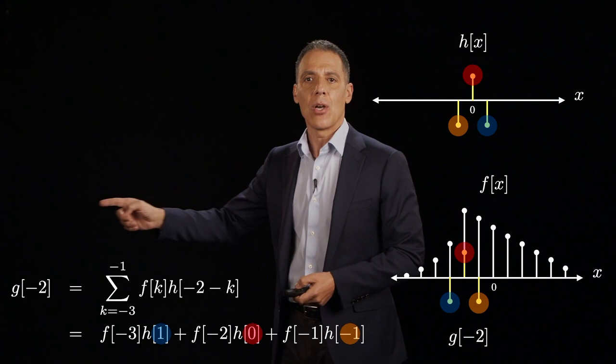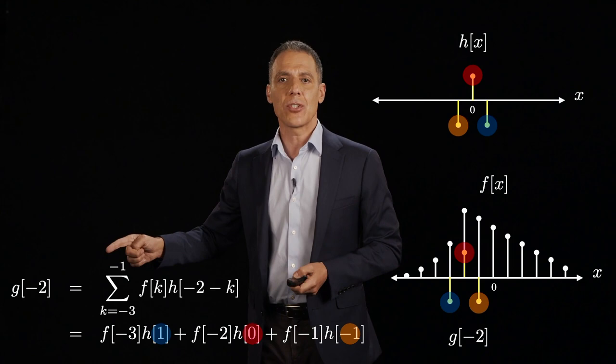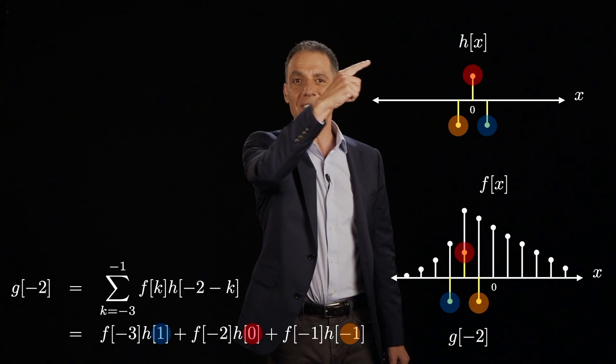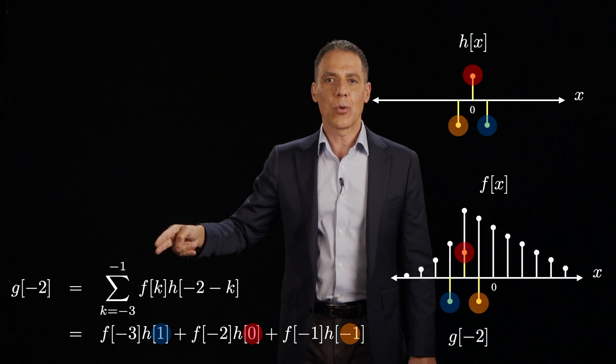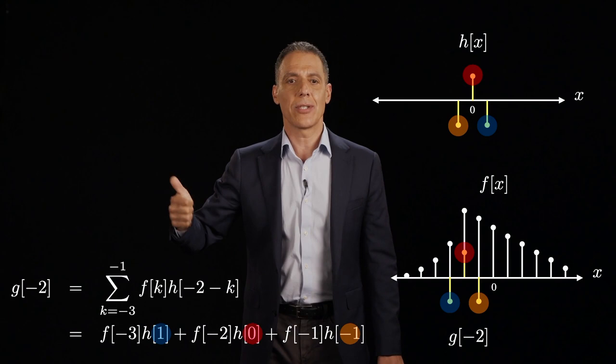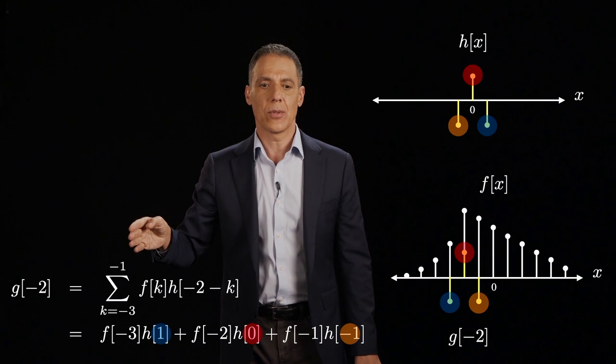I'm going to ask what is the value of g at, say, negative 2. Just pick one of the values. Well, it's equal to the sum from k equals minus 3 to minus 1. First of all, what happened to my infinite bounds? I'd been writing this as an infinite sum. Well, I don't have to worry about the infinite sum anymore because this thing is only defined for three values. So all I have to worry about is h of -1, h of 0, and h of 1. And the only time h has those values is when k is equal to -3, -2, -1. That is when it's centered at the -2 value.